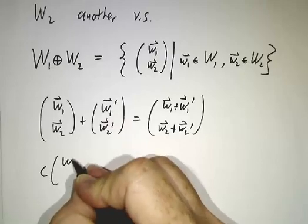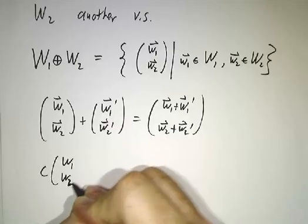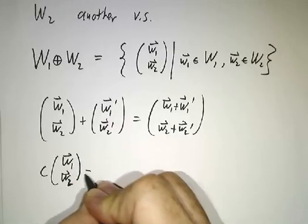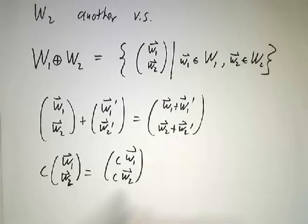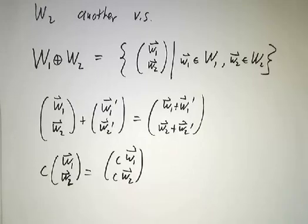Likewise, if you want to multiply (w₁, w₂) by a scalar, you just multiply the first guy by the scalar, you multiply the second guy by the scalar. And of course, you've seen this before.